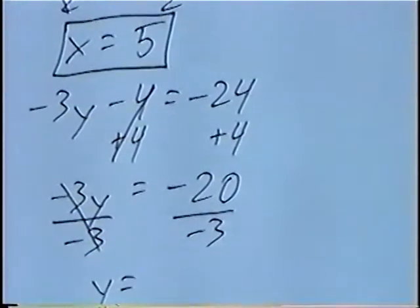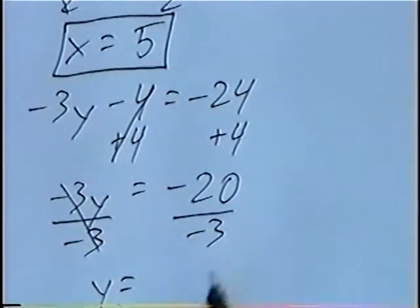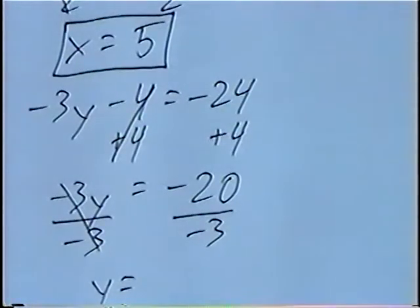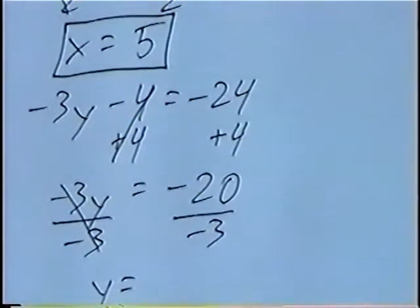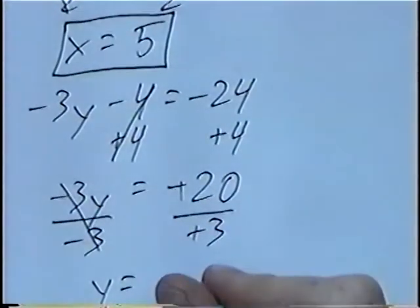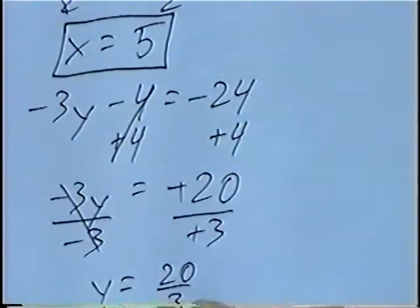3 does not divide into 20. And the fraction 20 over 3 cannot be reduced. If we have two negatives, a negative divided by negative would be a positive. So our final answer would be 20 over 3.